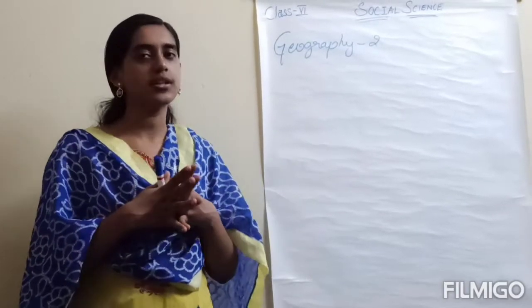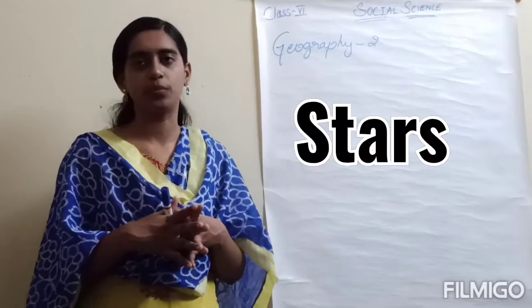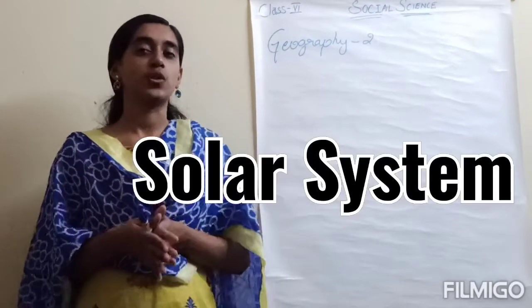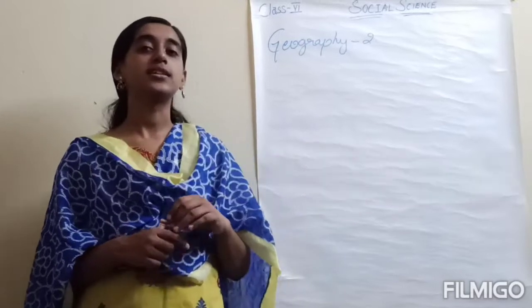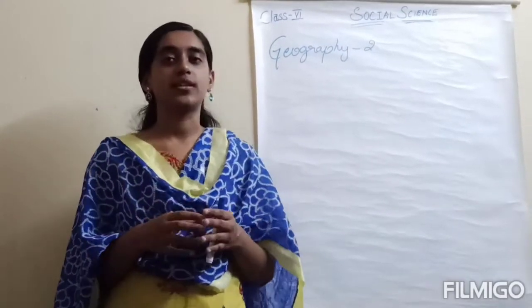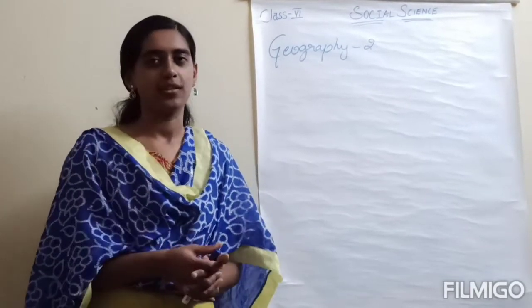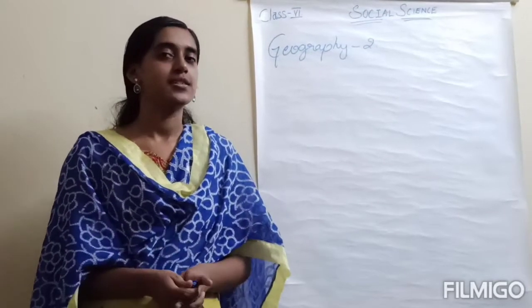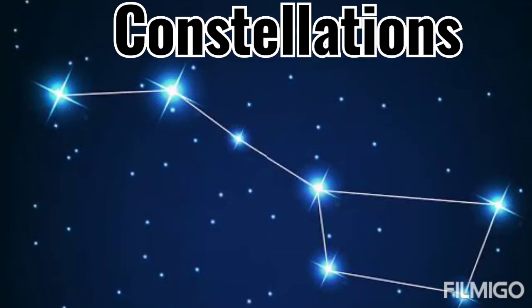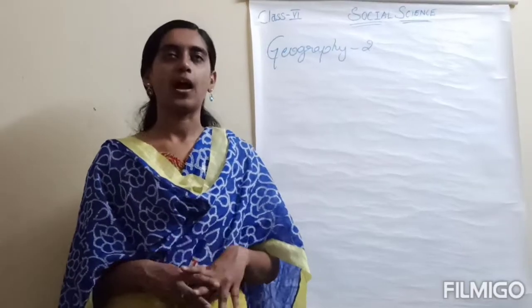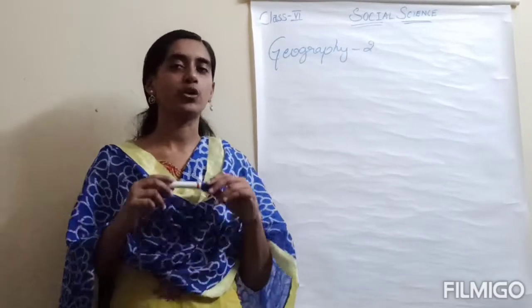We also saw how stars are formed and how our solar system was formed. And when a few stars make a particular shape of an object or a person, it is called a constellation. The example of a constellation we learnt in geography lesson 1 is Ursa Major, or the Great Bear. So we covered all these constellations, and other than that, we studied the solar system.